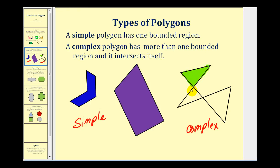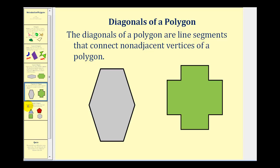This complex polygon has three bounded regions: one here, one here, and one here, for a total of three bounded regions. Now let's talk about the diagonals of a polygon. The diagonals of a polygon are the line segments that connect non-adjacent vertices of a polygon.